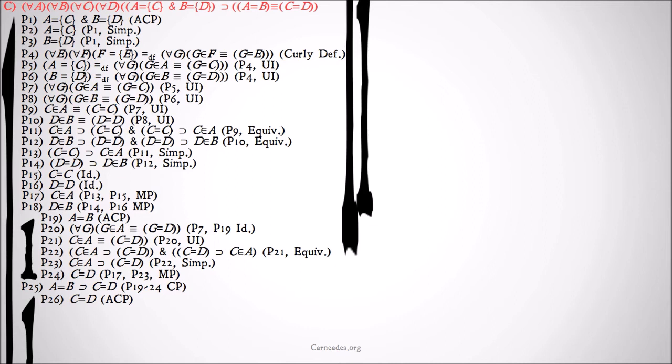The other direction — C equals D implies A equals B — is going to be a lot harder. That should make sense: pulling things out of the curly brackets to show that if C equals D then the whole sets must be equal is harder than showing that equal sets have at least one equal member. So we assume C equals D and try to prove A equals B, but we'll need to do more assumed conditional proofs, using the axiom of extensionality.